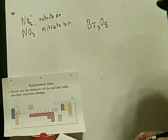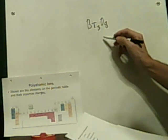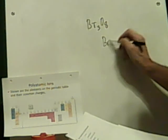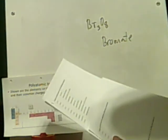Br3O8. Tribromium octa oxide — could this possibly be bromate? It's some form of bromium oxide. Bromine is a halogen so it would be a negative 3, but this does not look like an ionic compound at all. I'm going to just guess bromate, but actually the answer is tribromium octaoxide — that's actually what I said initially and I thought I was making a joke. I've never heard of that before.